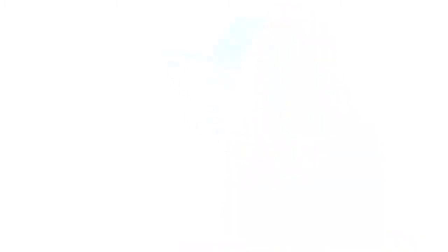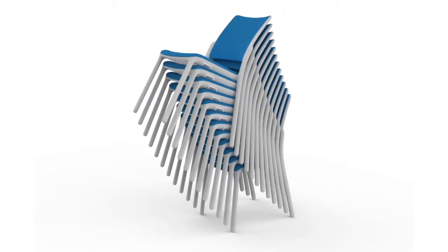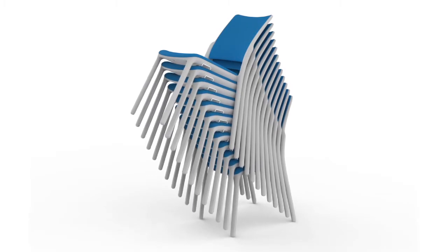Currently in the hospitality market, banquet chairs stack about 10 high. We wanted to improve upon that. The bottom surface of one chair actually rests directly on the cushion of another, eliminating space in between the chairs, and the Mode stacks 12 high, which in turn gives you about a 20% savings in real estate.